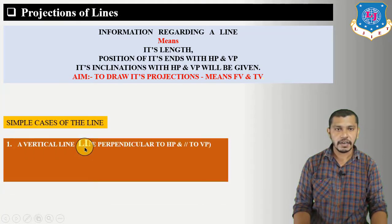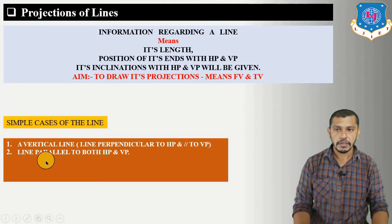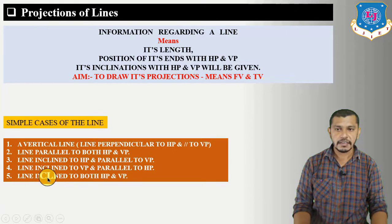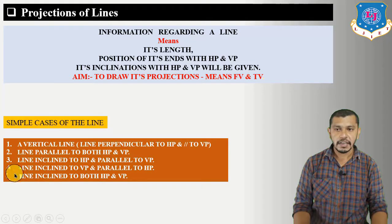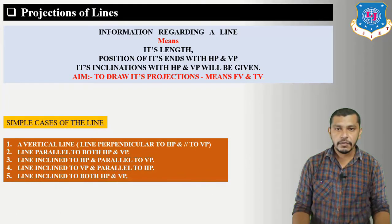The first case is a vertical line — a line perpendicular to HP, parallel to VP. Second case: line parallel to HP and VP both. Third case: line inclined to HP and parallel to VP. Fourth case: line inclined to VP, parallel to HP. Fifth and final case: line inclined to both HP and VP — this is the most important case as maximum problems are solved based on it.